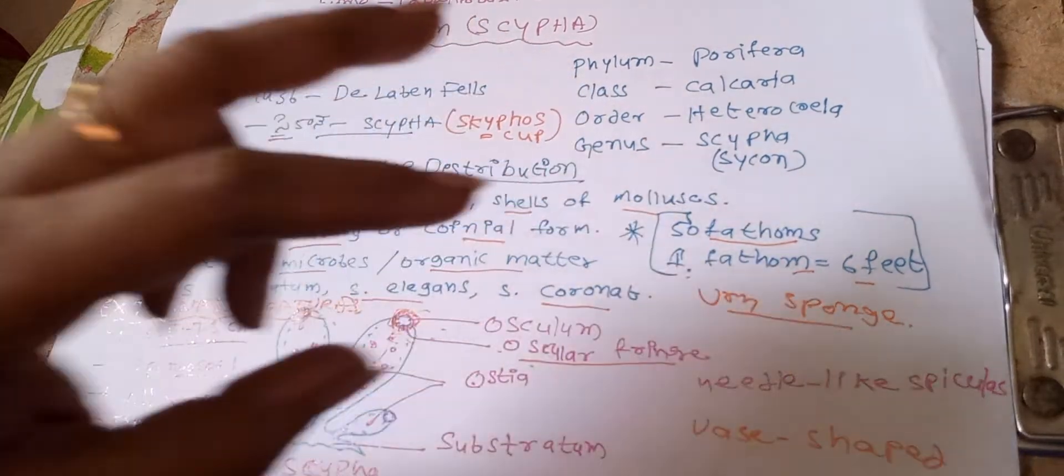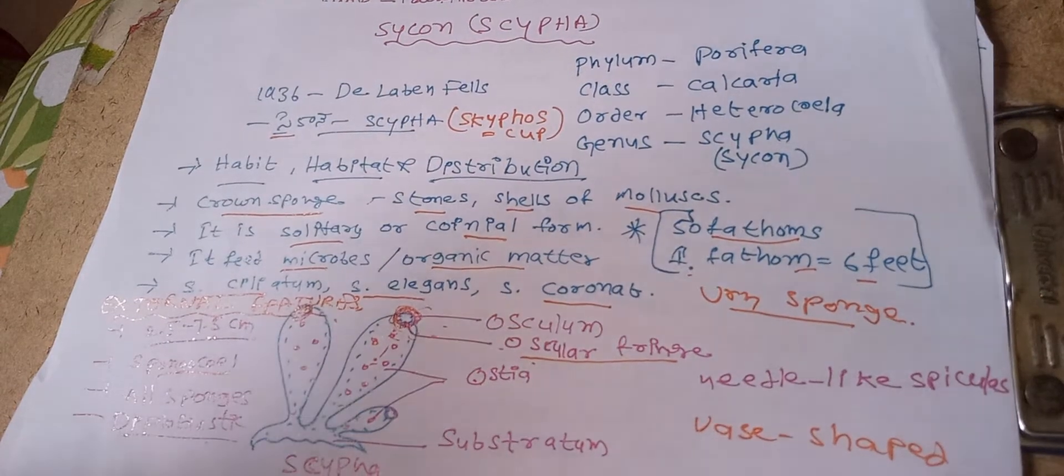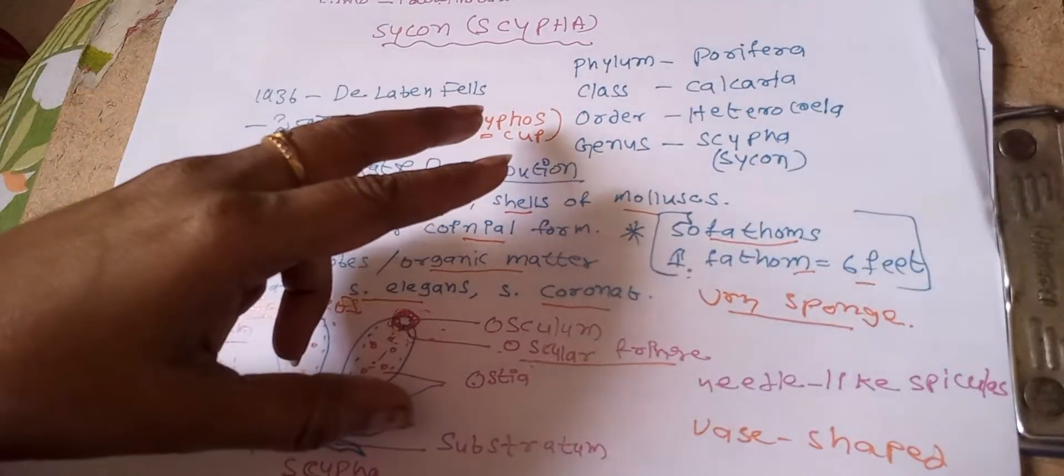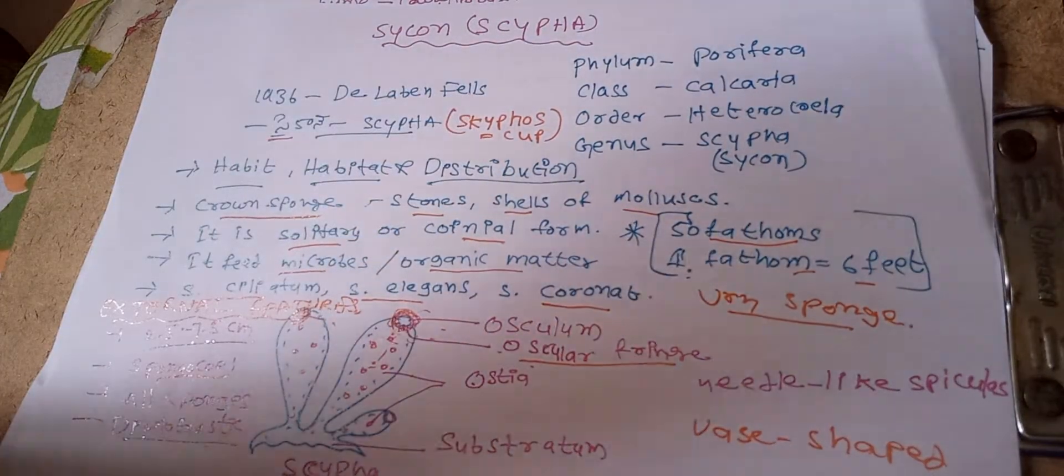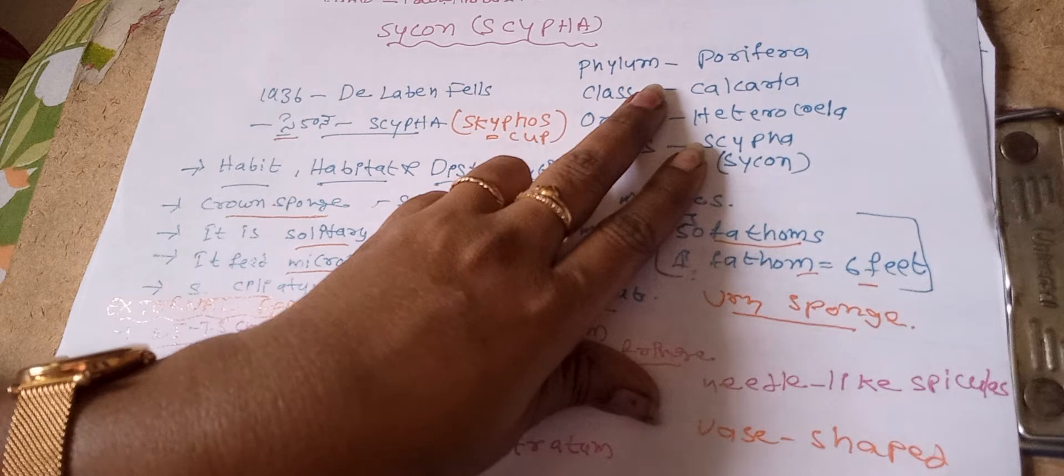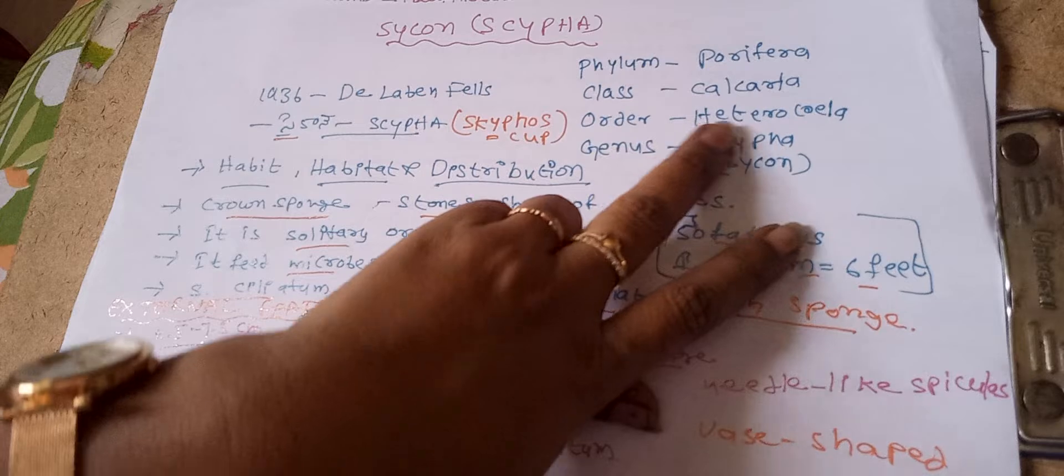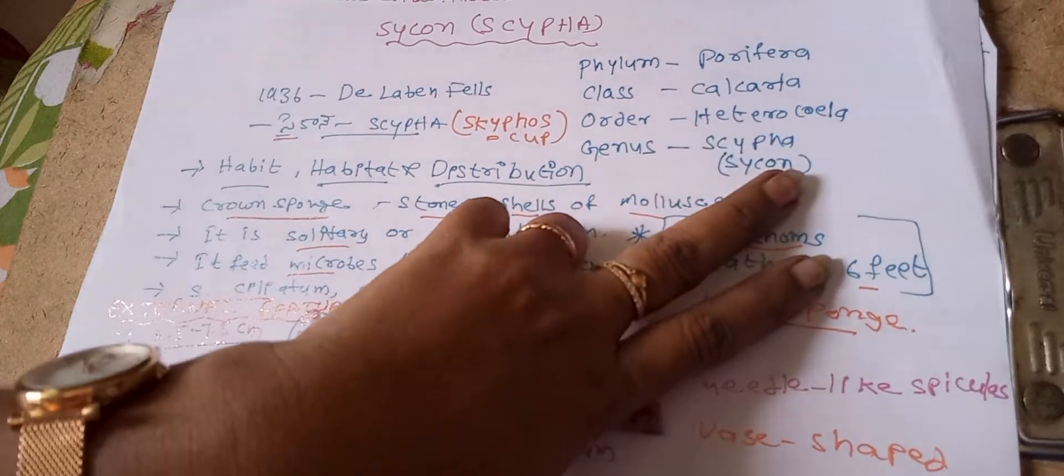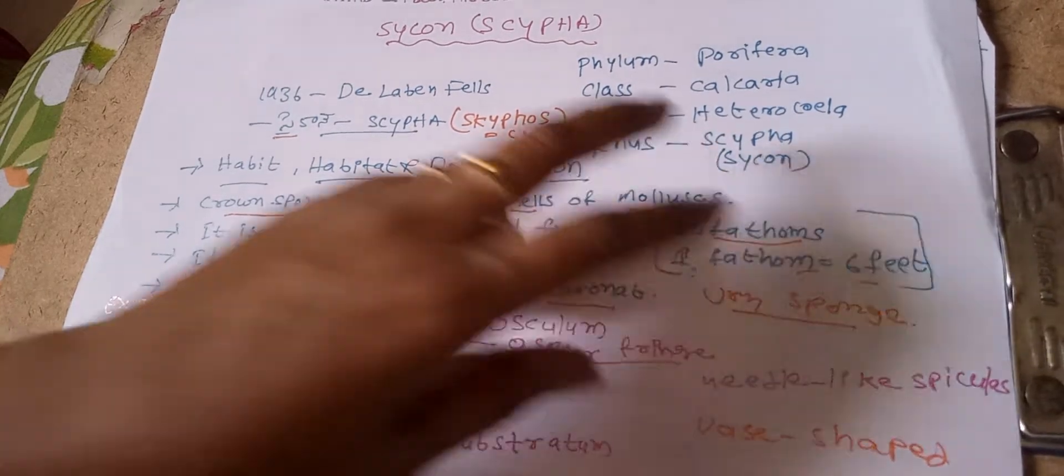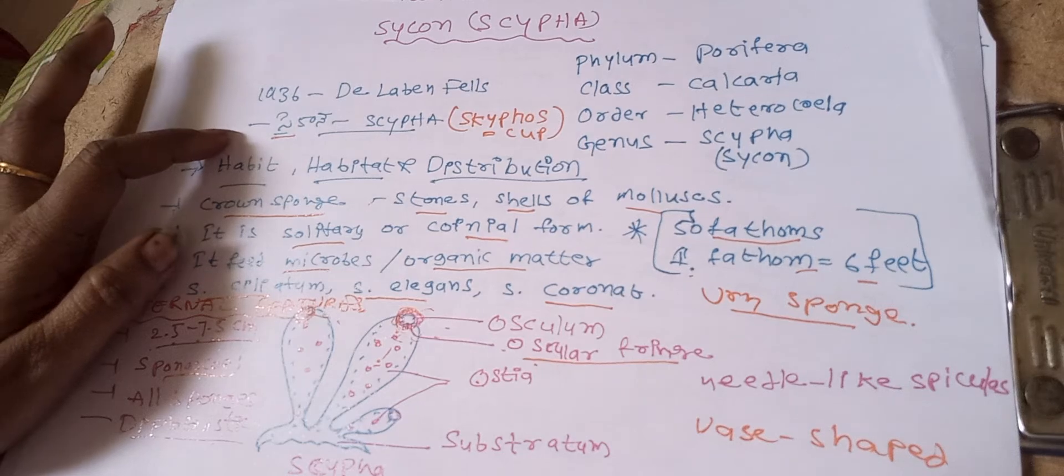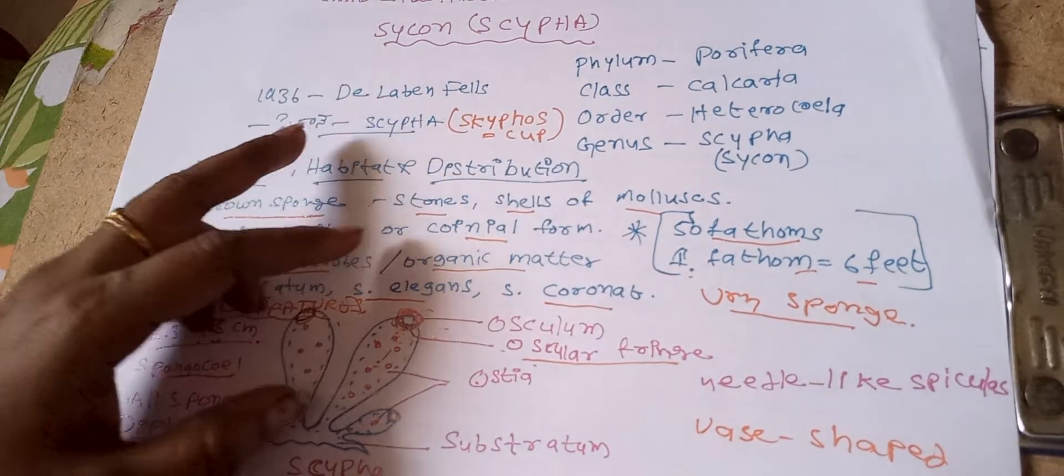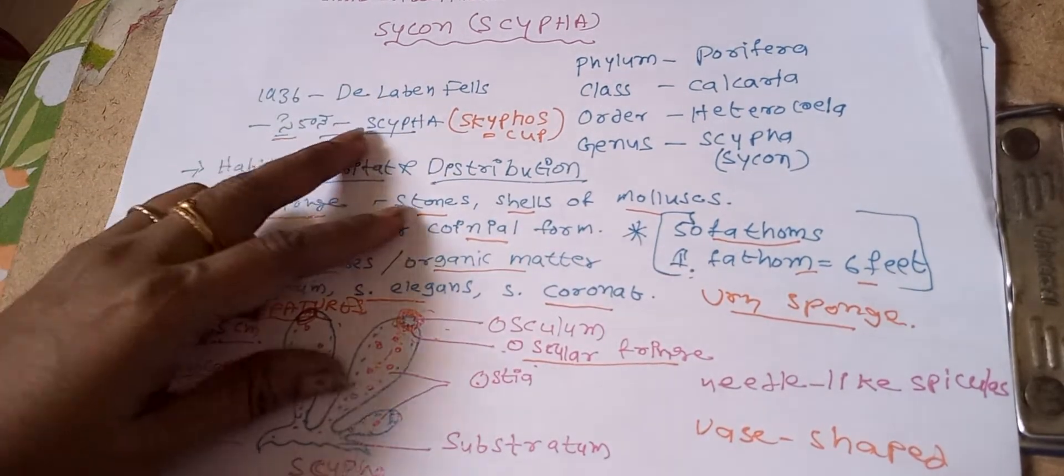habit and external features, and cellular organization. Classification: Phylum Porifera, Class Calcarea, Order Heterocoela, Genus Scypha or Sycon. In 1936, the Loban fellow tried to change Sycon name to Scypha.